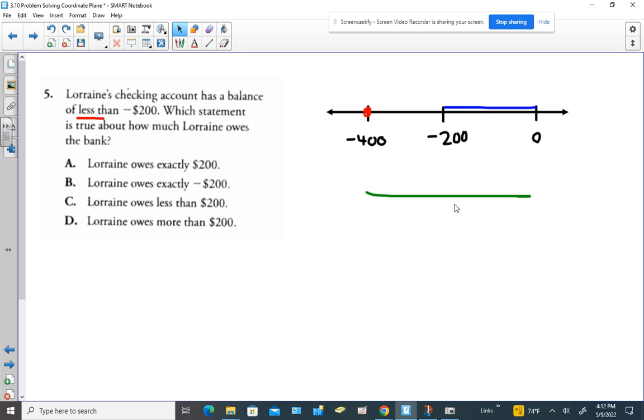Sometimes when you take this away and pull it away from the number line, that helps you answer the question. So if we're saying that her account balance could be this, the green amount.